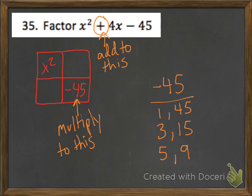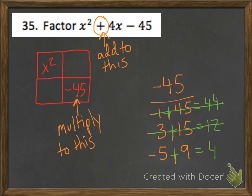I know that middle term is positive, so the bigger number in each factor pair needs to be positive. That means I'm going to have a negative 1, a negative 3, and a negative 5. Checking which pairs add to 4: negative 1 plus 45 is 44, negative 3 plus 15 is 12 — neither of those work. But negative 5 plus 9 is a positive 4. That's what we were looking for, so my two numbers are negative 5 and 9.